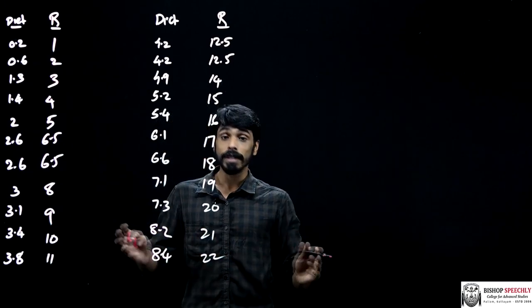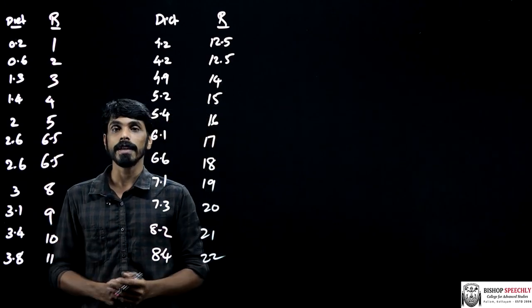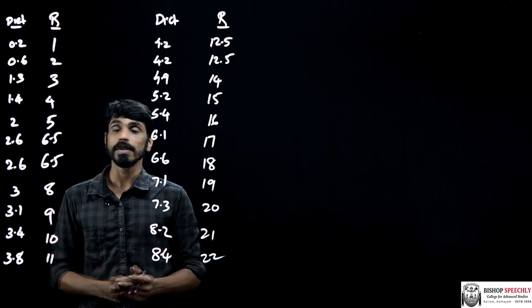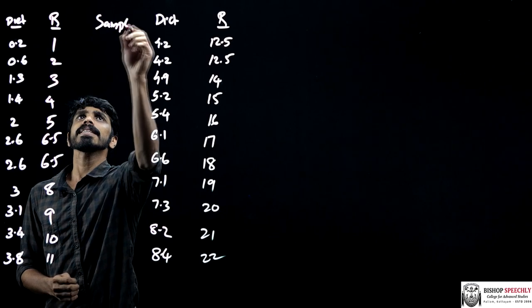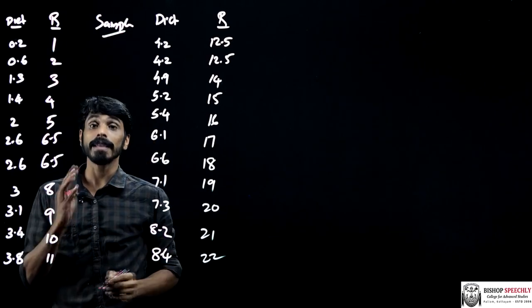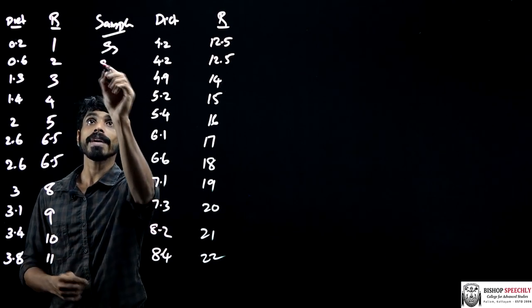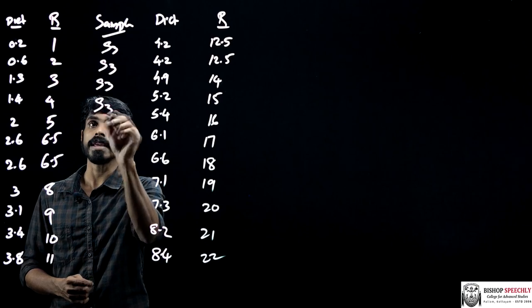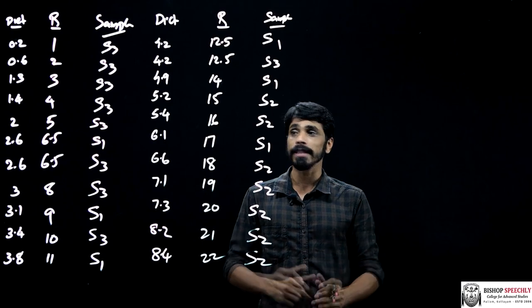Next I have to find out from which diet plan these observations came. In the question we can see that 0.2 comes from diet 3, so I'm going to put S3. In case of 0.6 also S3, 1.3 also S3, 1.4 also S3, and I'm going to continue with that.